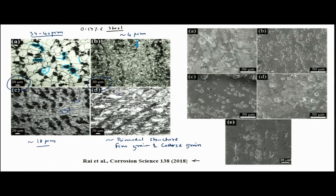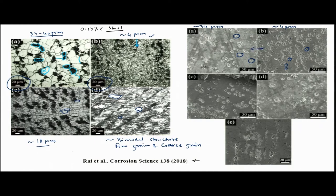This particular steel was then exposed to 3.5% NaCl solution, and on the surface we could see pits. For the as-received steel with ~34 micrometer grain size, we observe pits. As grain size decreases due to recrystallization to 4 micrometers, the number of pits increases significantly. Comparing these two samples, finer grains show a much higher number of pits.